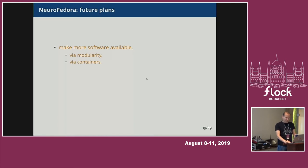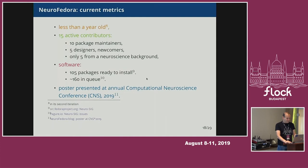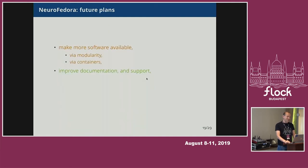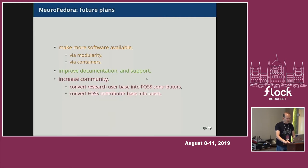So what do we want to do? Make more software available. On the neuroimaging side, we've got some big holes in terms of complete pipelines. Obviously improve the documentation — there's a lot missing there once you're dealing with end users. Definitely increase the community, and convert a research user base into free and open source software contributors.